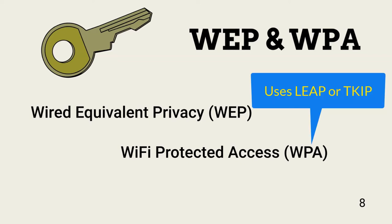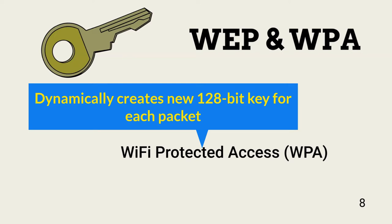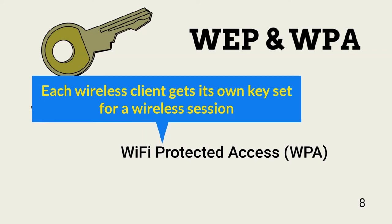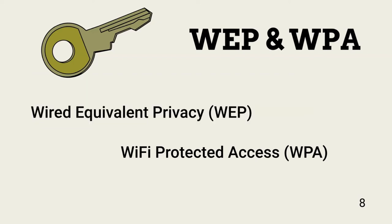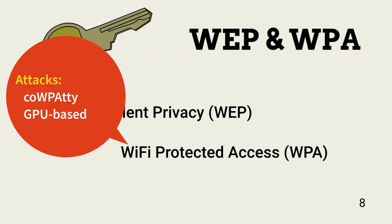WPA used LEAP, or Lightweight Extensible Authentication Protocol, and TKIP, Temporal Key Integrity Protocol. Unlike WEP, WPA can dynamically create a new 128-bit key for each wireless packet, and a separate key set is negotiated with each device. The key set is created after an endpoint uses a WPA passphrase to authenticate. WPA is not usually secure enough for enterprise protection. Although the passphrase must be no shorter than 14 characters, it's still a single-factor approach that can fall to brute force attacks like CowPatty and GPU-based cracking tools.